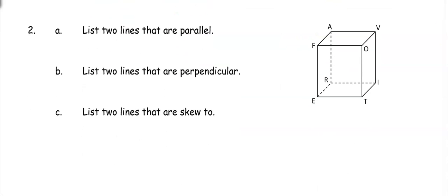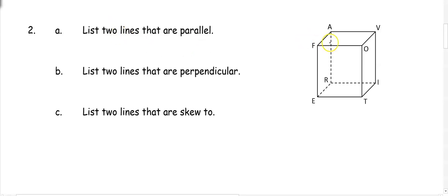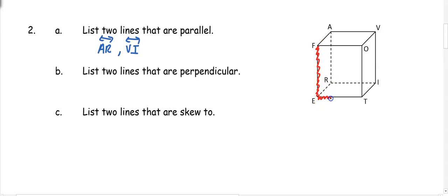Number two: list two lines that are parallel. We now have a rectangular prism. Two lines going in the same direction could be AR and VI — both going straight up and down. There are many choices, but that's one example. For perpendicular lines, they intersect at a corner making a right angle. Any square face corner would work, so we could say FE is perpendicular to ET.